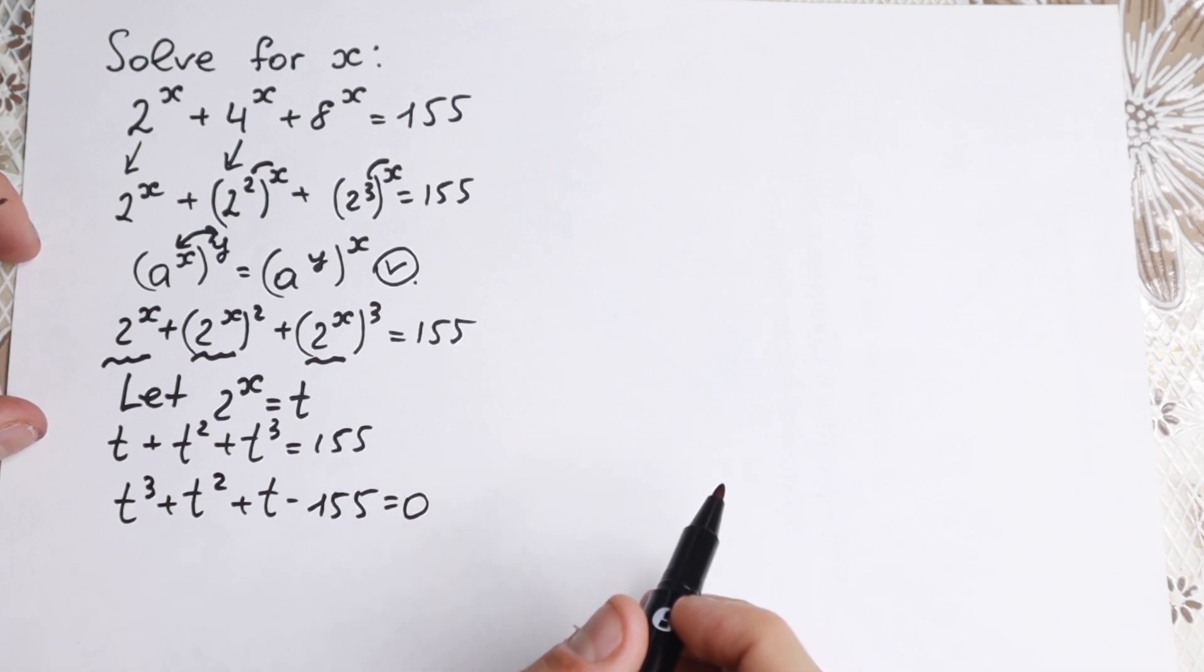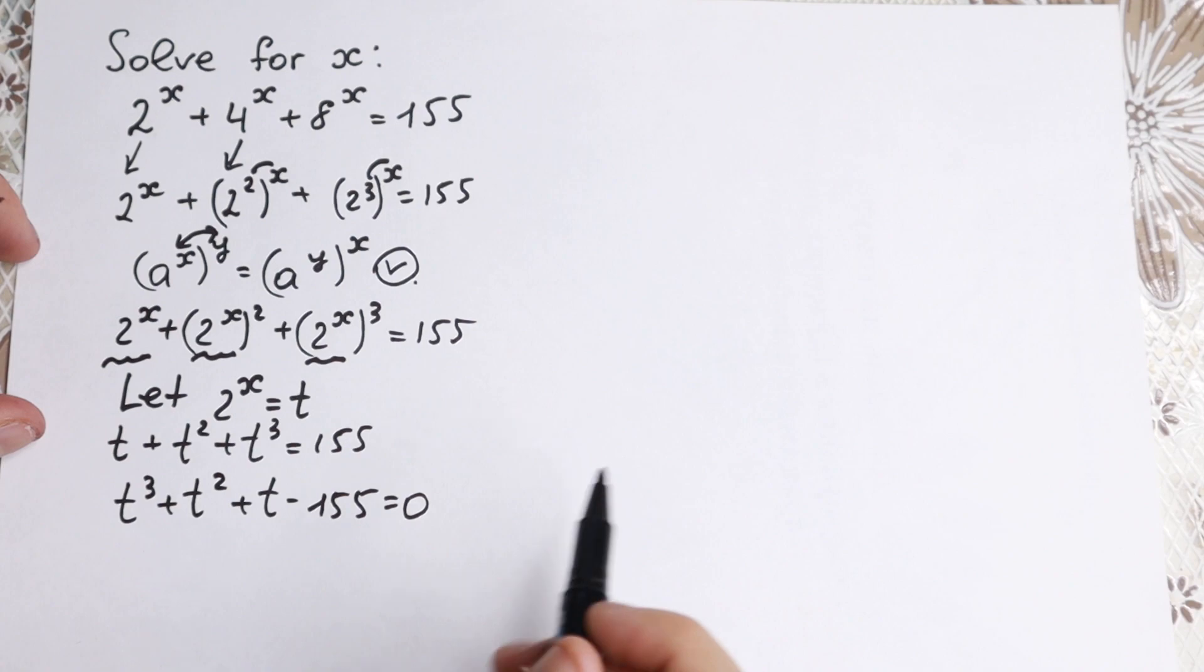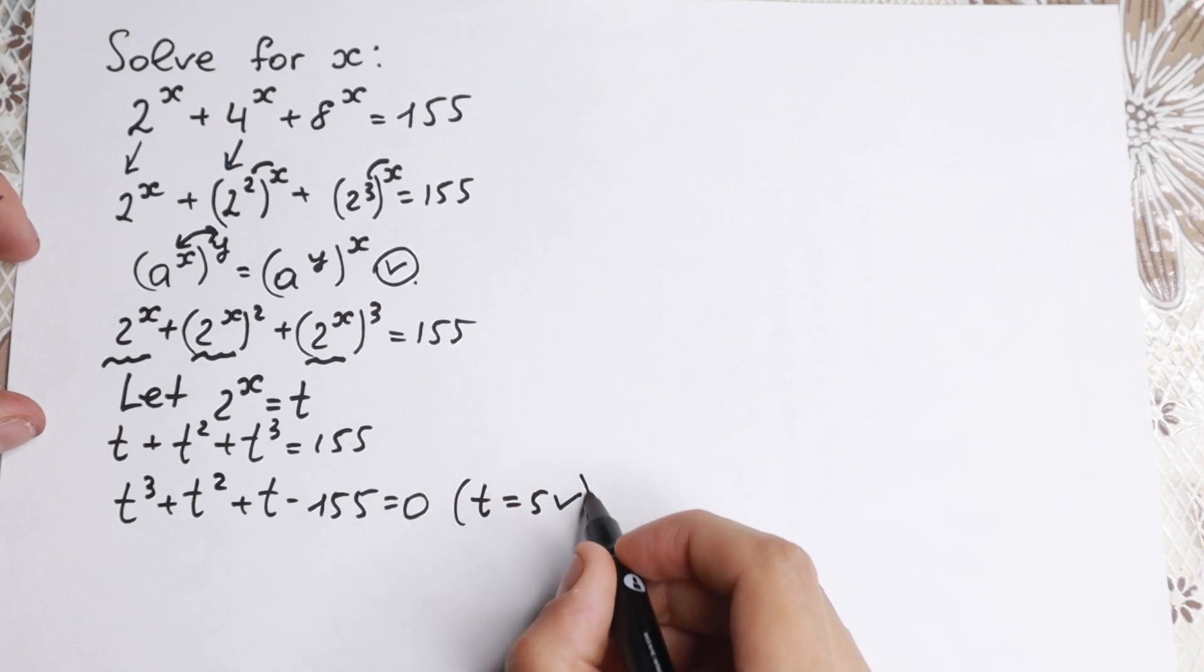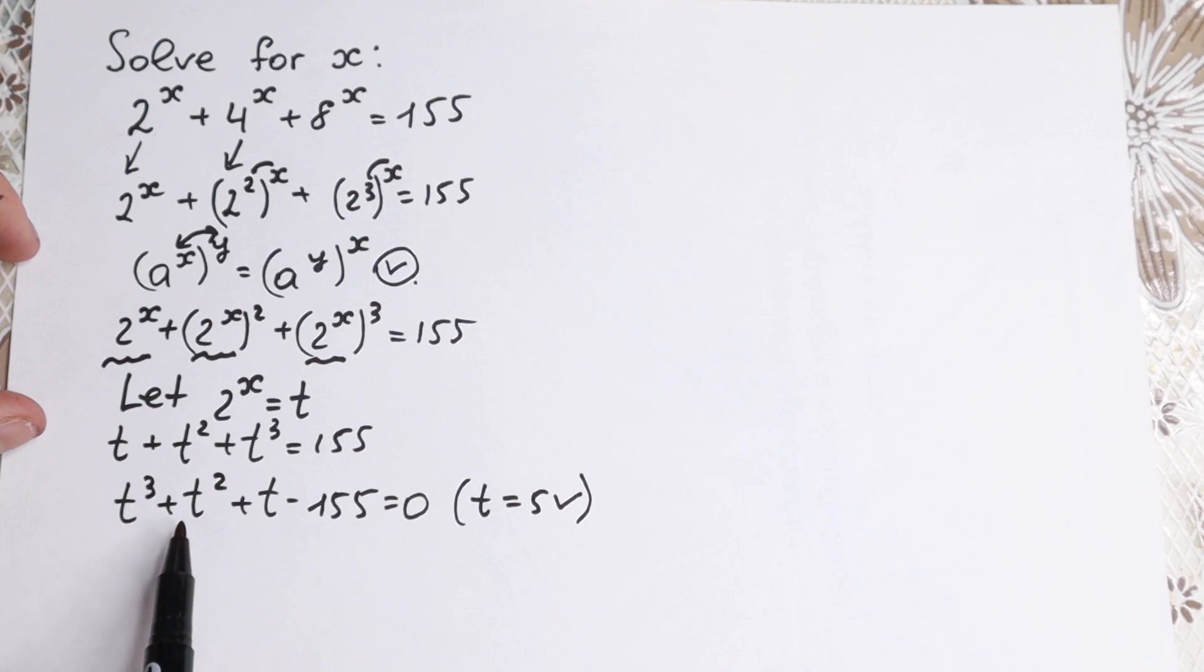And right now I want to mention one really interesting moment, because it's hard to find a factor using division. It's really good to find a factor using inspection at first. Using our inspection we can find that t equal to 5 will be our factor, because 125 plus 25 plus 5 minus 155 equal to zero. So t equal to 5 is our factor.